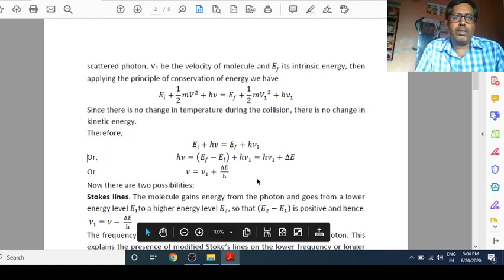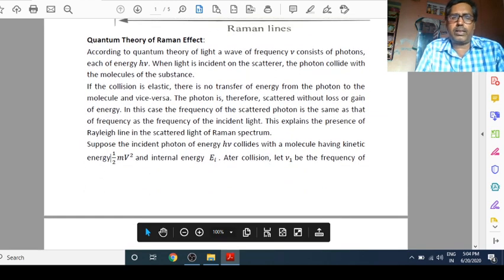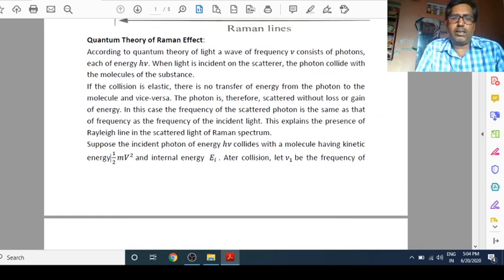But if we see another possibility in which there is a loss or gain of energy, then what happens? Suppose the incident photon of energy H nu collides with a molecule having kinetic energy half mv square and internal energy EI. After collision, you know that if there is an exchange of energy, velocity will change, frequency will change.